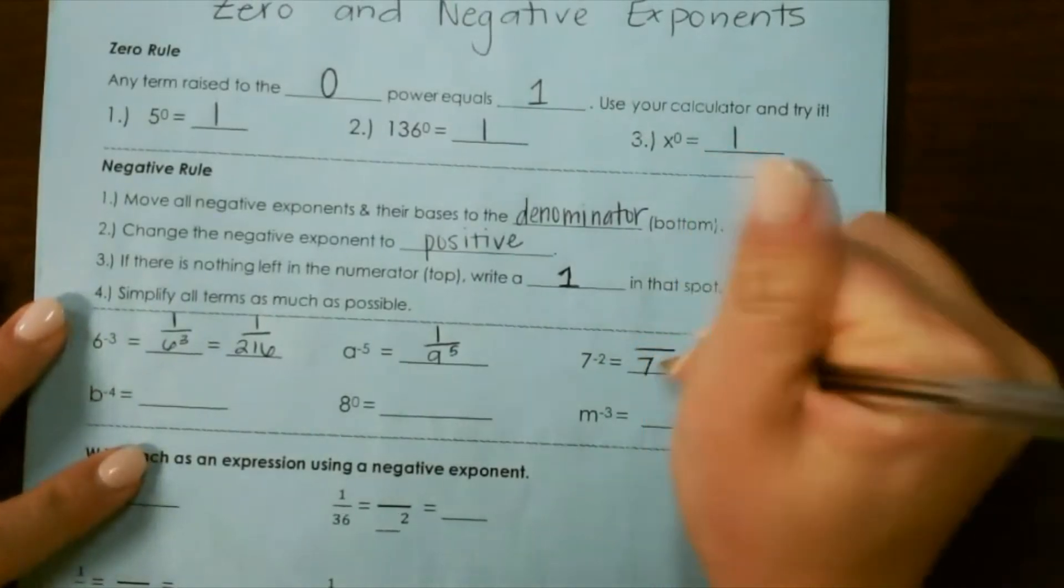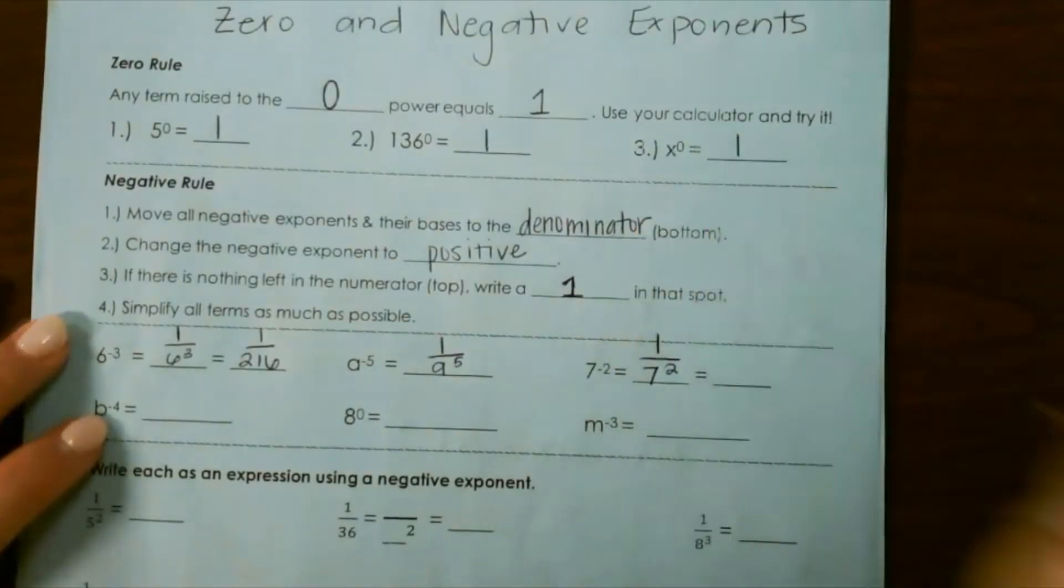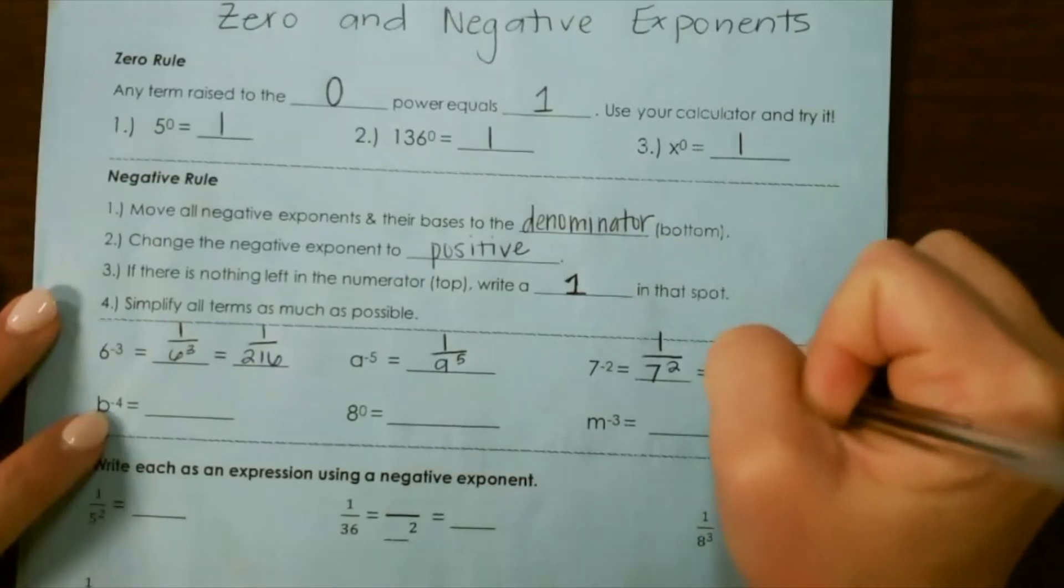For the next one, 7 to the second power goes to the bottom, so we change that negative exponent to a positive and add 1 to the top. We can simplify 7 to the second power to 1 over 49.